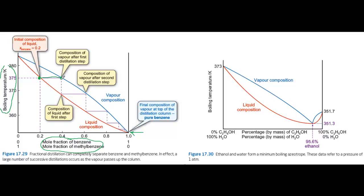You could then take that vapour and condense it, and you would get a liquid whose composition was again 0.4 mole fraction of benzene. And you could take that liquid and boil it again, and the vapour would become more rich still in benzene.